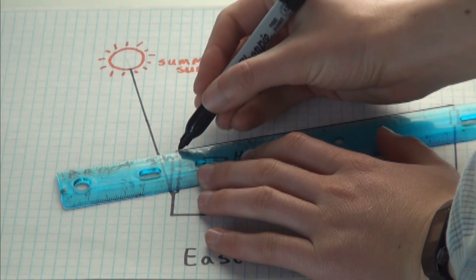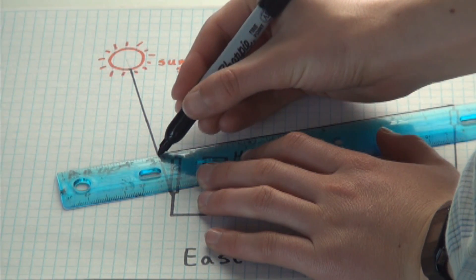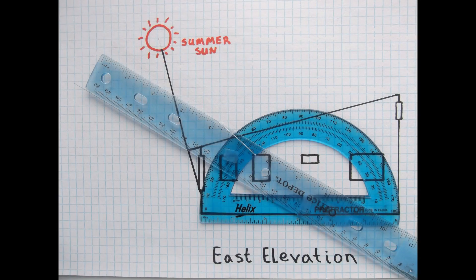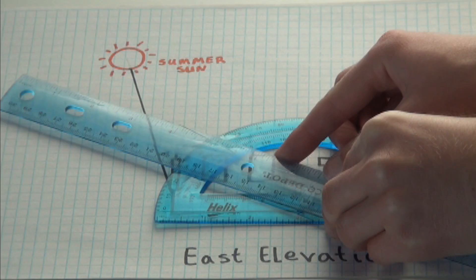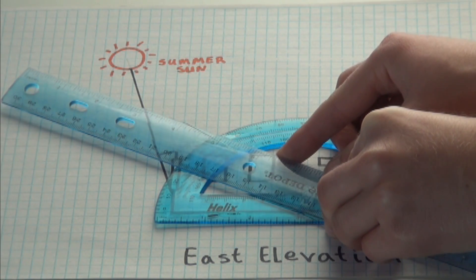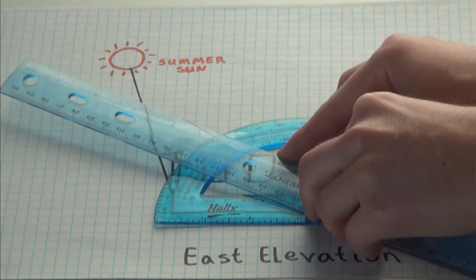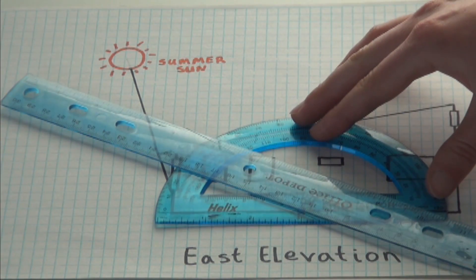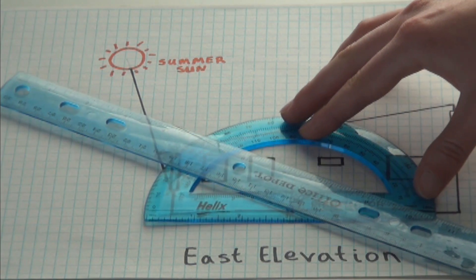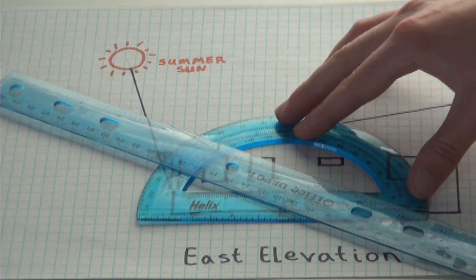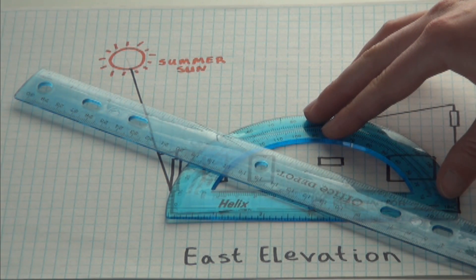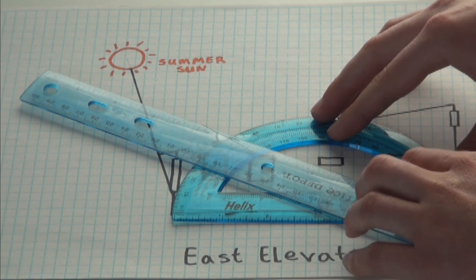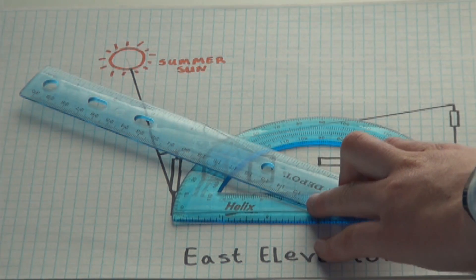Now let's make sure that the winter sun can still reach the windows. For our house, the winter solstice sun altitude is 28 degrees. Line up your protractor along the bottom of the house. Slide the protractor along the bottom of the house until the 28 degree angle is lined up with the top of your window. Double check that your ruler and protractor are lined up and you're measuring the correct angle.